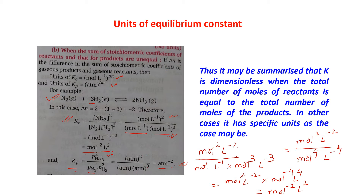It may be summarized that K is dimensionless when the total number of moles of reactants equals the total number of moles of products. In other cases, it has a specific unit. Just write down the units and calculate — that will be straightforward.